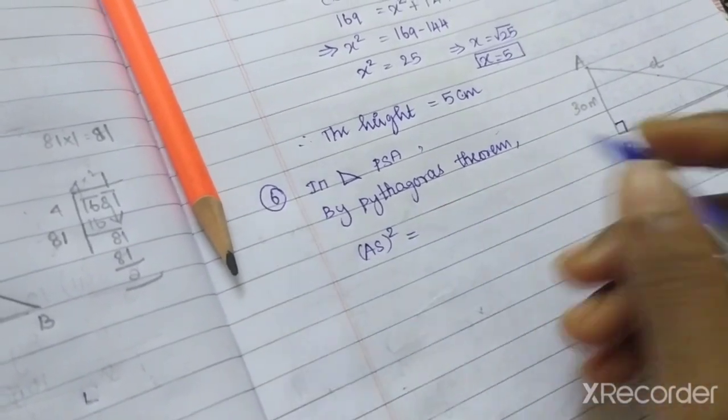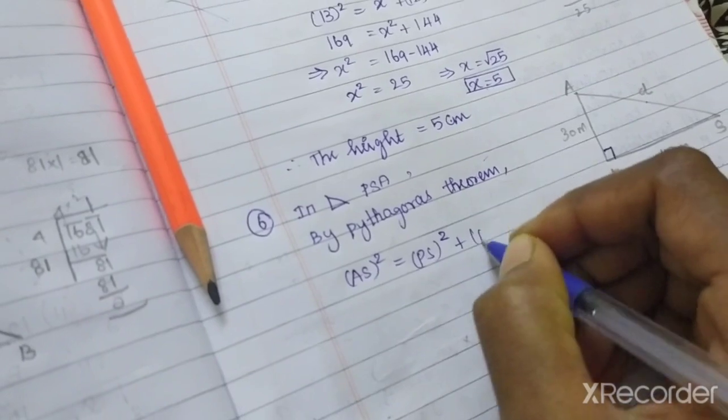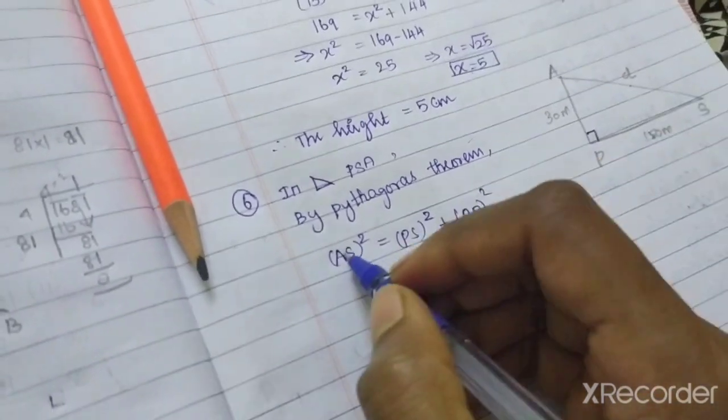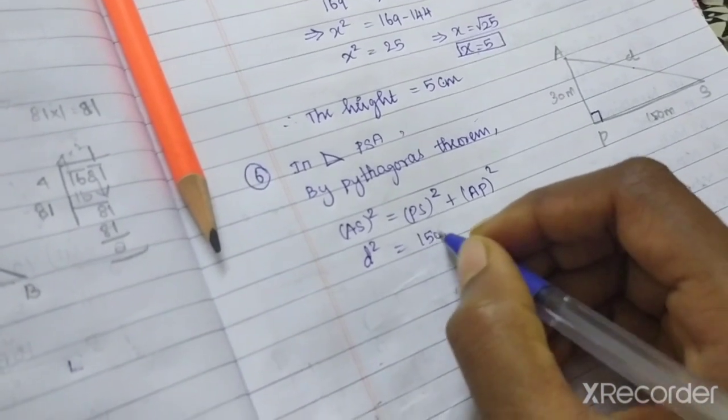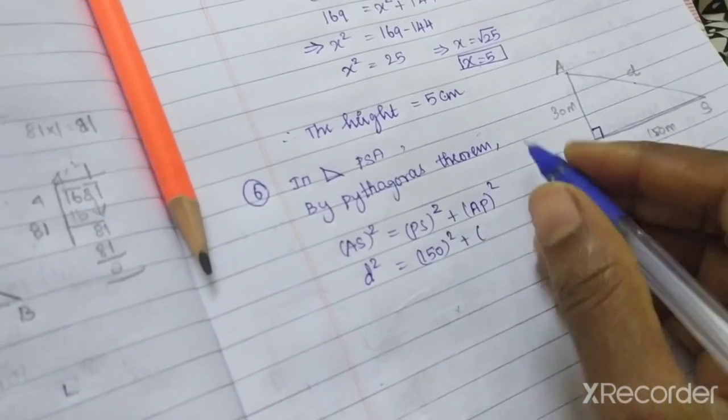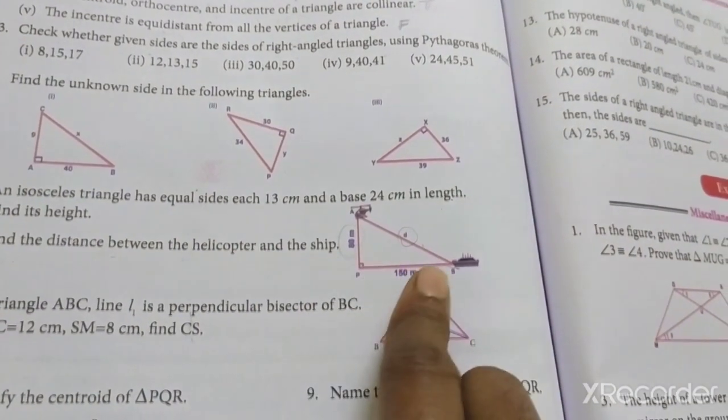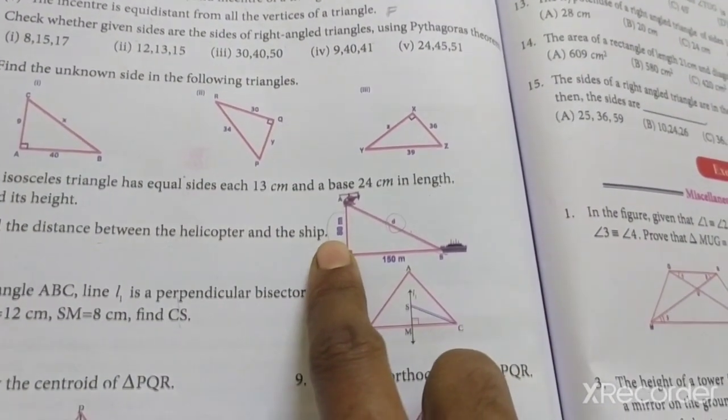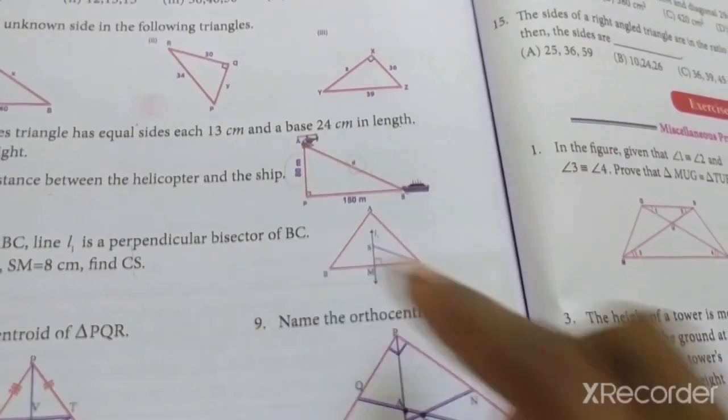PE square equals PS square plus SE square. PS is 150, SE is 80 meters. So we are going to find out the hypotenuse using Pythagorean theorem.